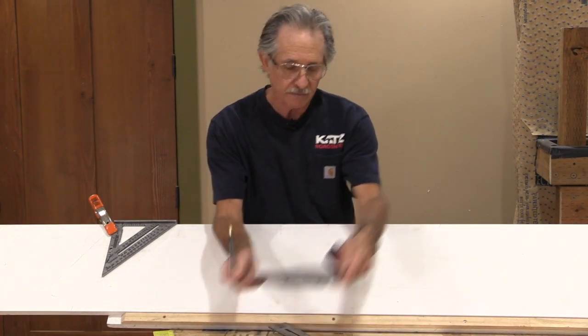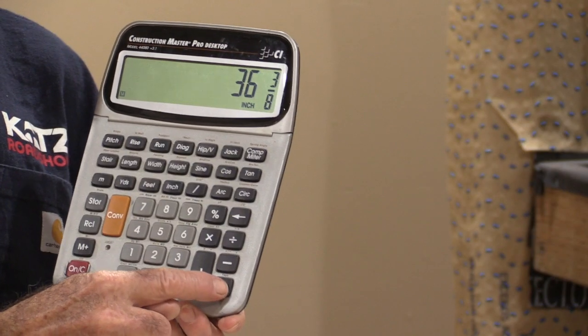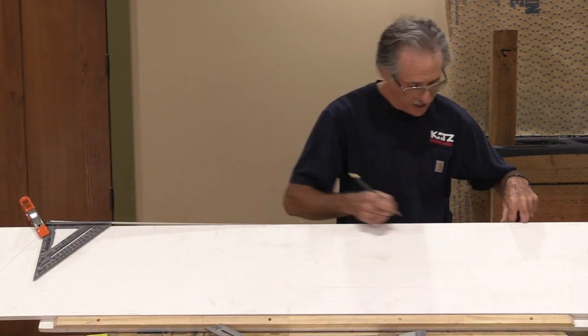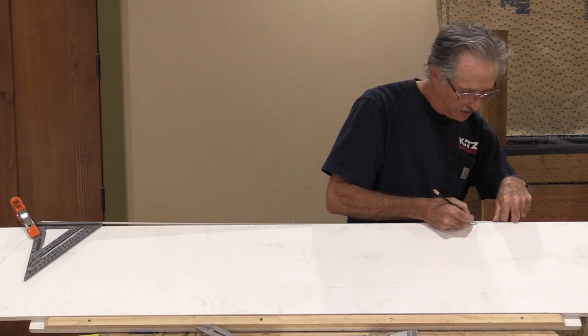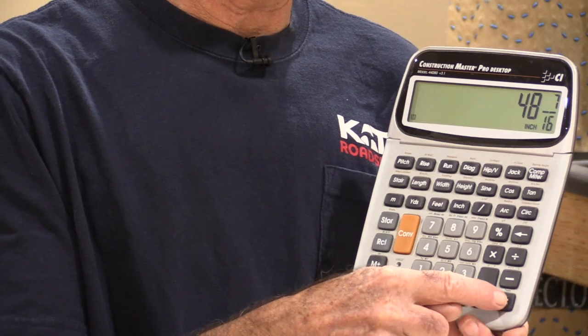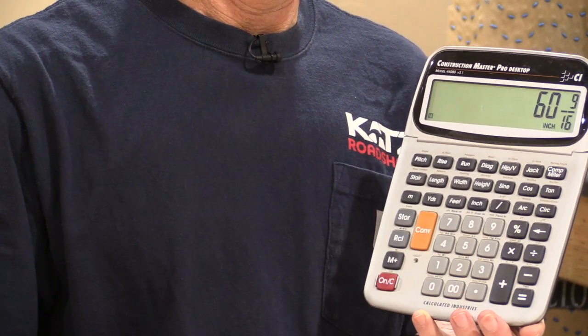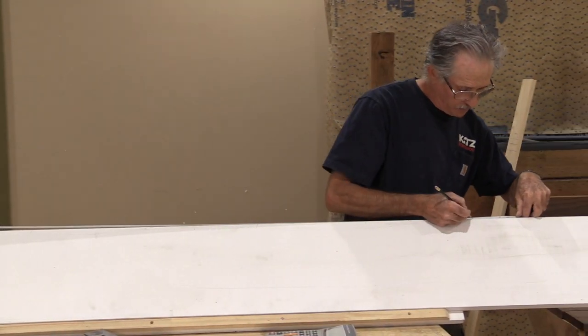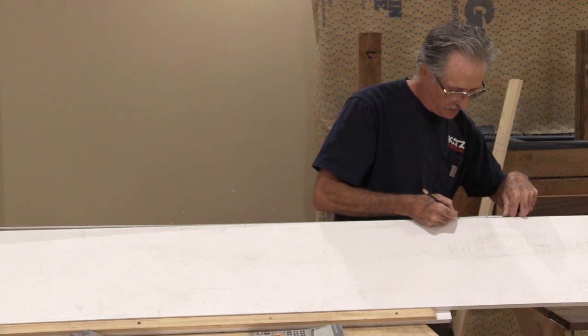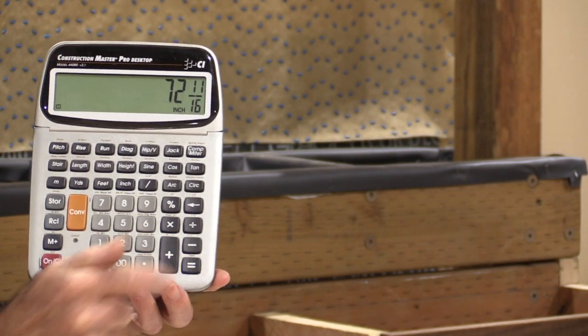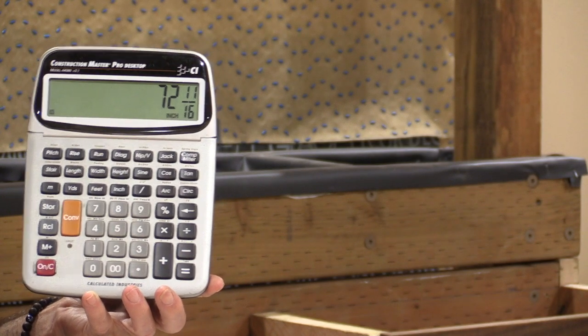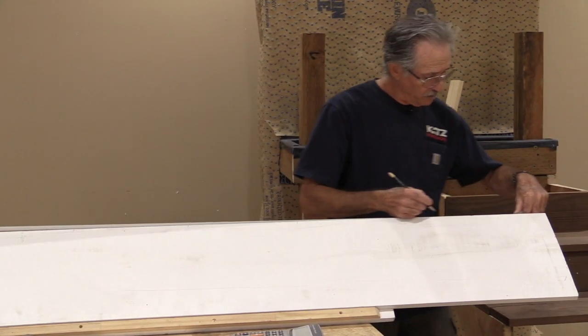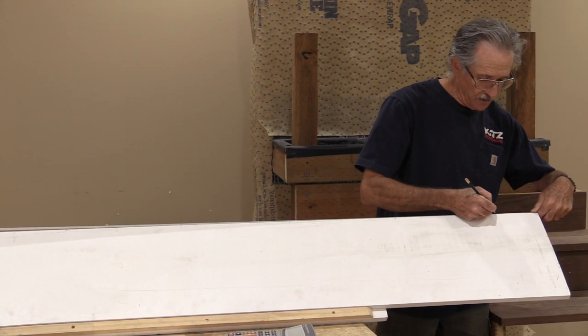The next one. I'll push the equals button again. And it's 48 and 7 sixteenths. 48 and 7 sixteenths right there. Then we've got another one, 60 and 9 sixteenths. Right here. And one more. Push the equals button one more time. 72 and 11 sixteenths. Here we go. 72 and 11 sixteenths. Right there.